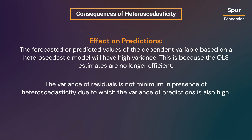The forecasted or predicted values of the dependent variable based on a heteroscedastic model will have high variance. This is because the OLS estimates are no longer efficient — the variance of residuals is not minimum in the presence of heteroscedasticity — and due to this, the variance of predictions is also high.